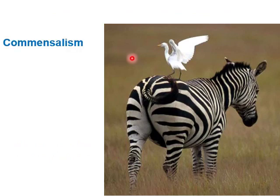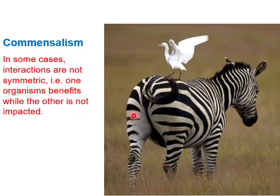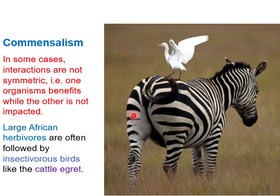Now we will discuss another type of interaction: commensalism. In some cases, interactions are not symmetric — one organism benefits while the other is not impacted. This means that commensalism is an interaction in which one organism benefits but the other experiences no difference. For example, this shows a zebra and a cattle egret bird.